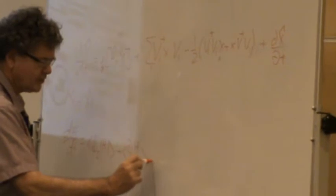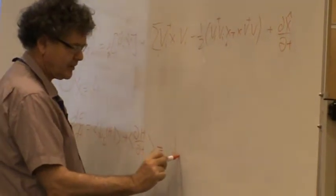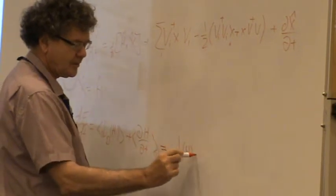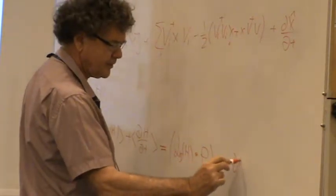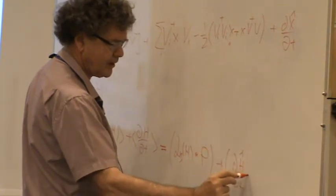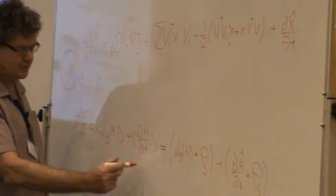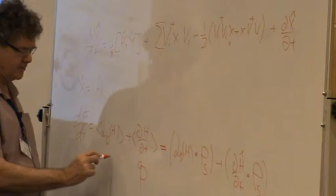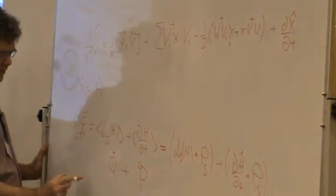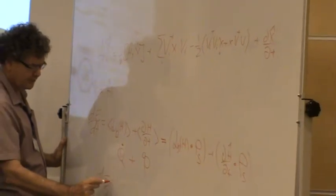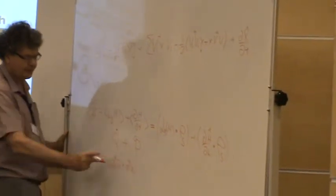I can write this explicitly: this is L_D applied to the density operator times H, plus this operator with a scalar product with the density operator. Our interpretation is that one term is the power and the other is the heat current. So we get a dynamical version of the first law: the energy change equals DQ plus DW. Taking the time derivative gives us this equation.